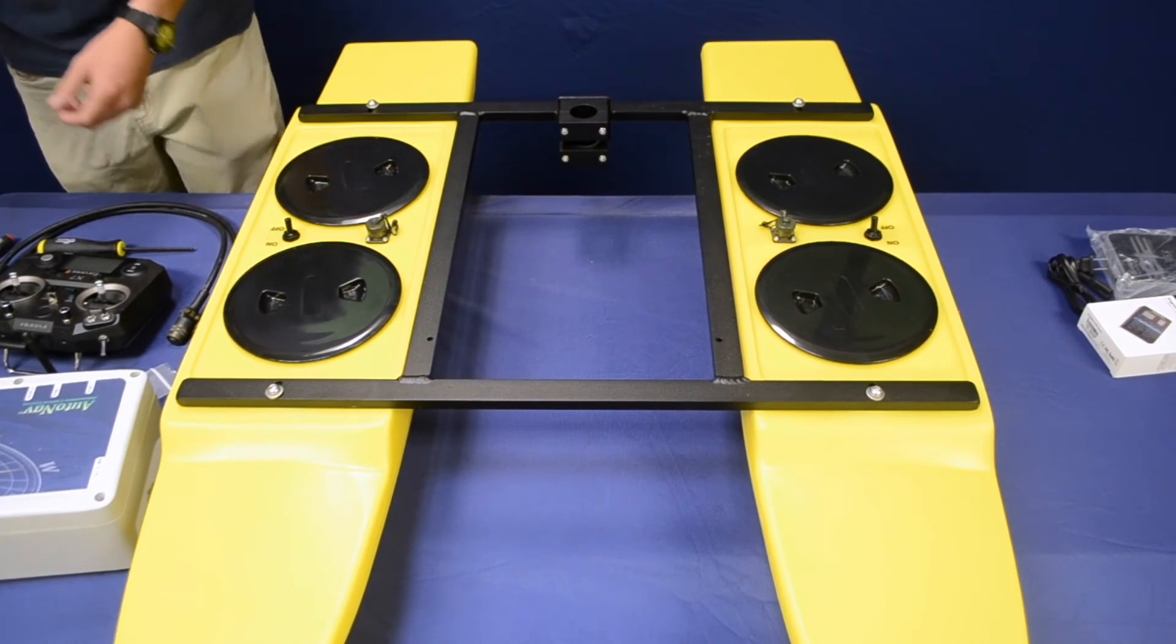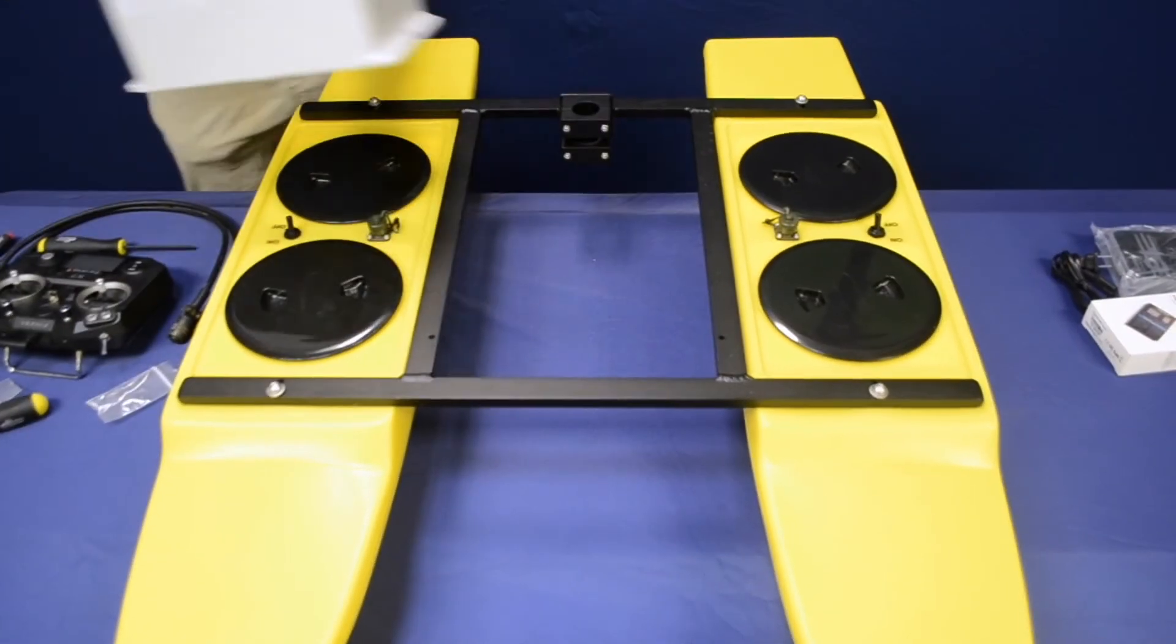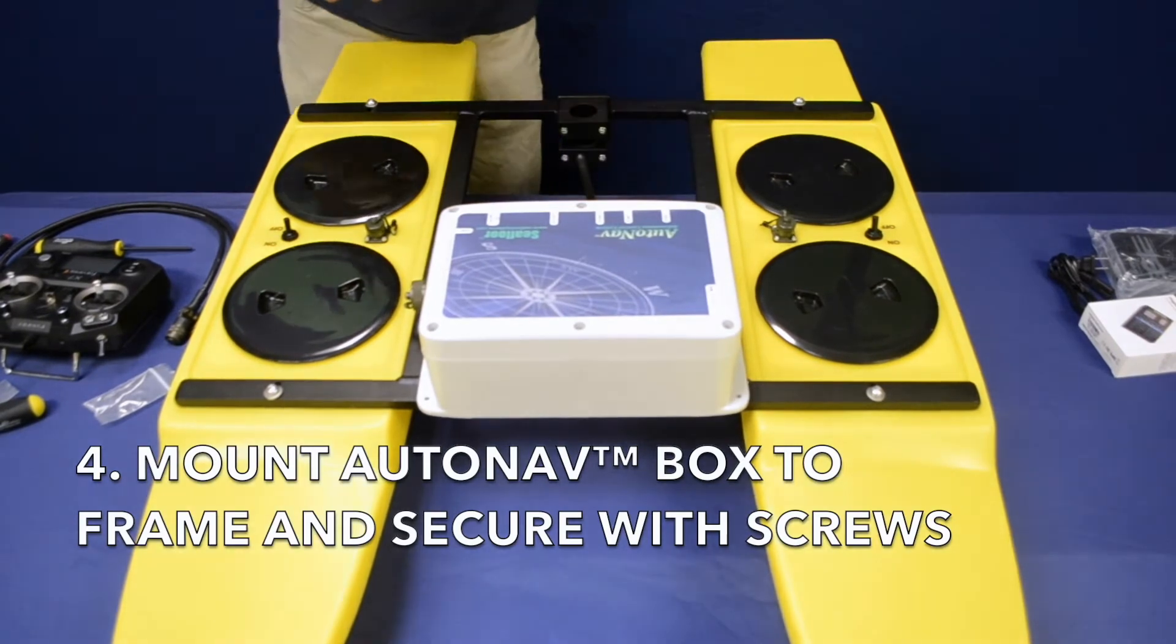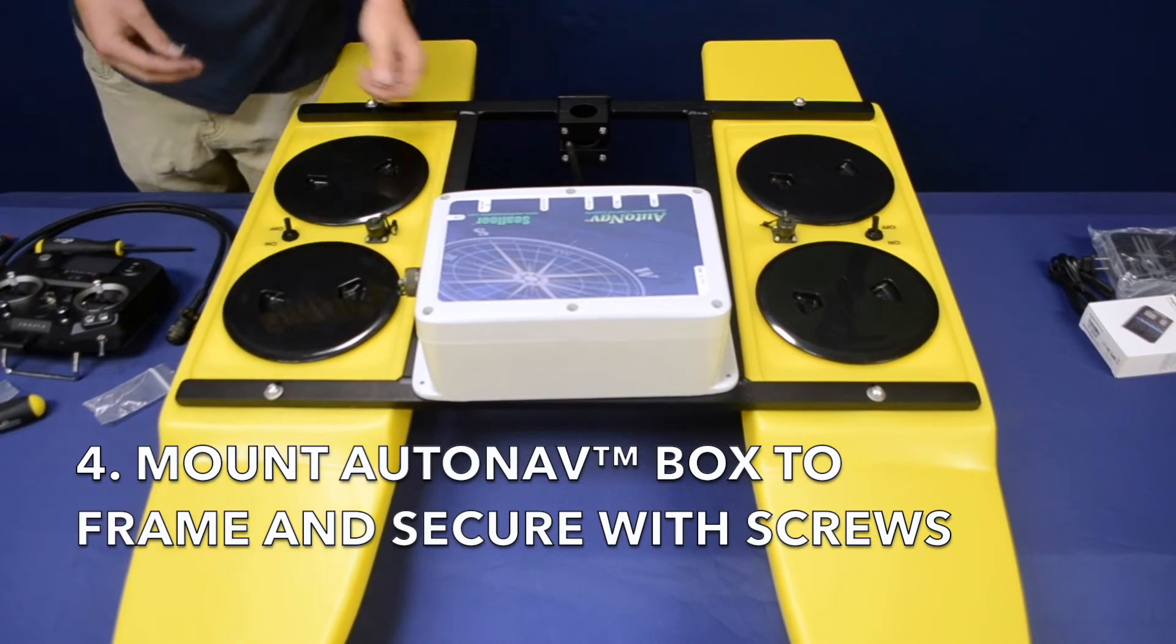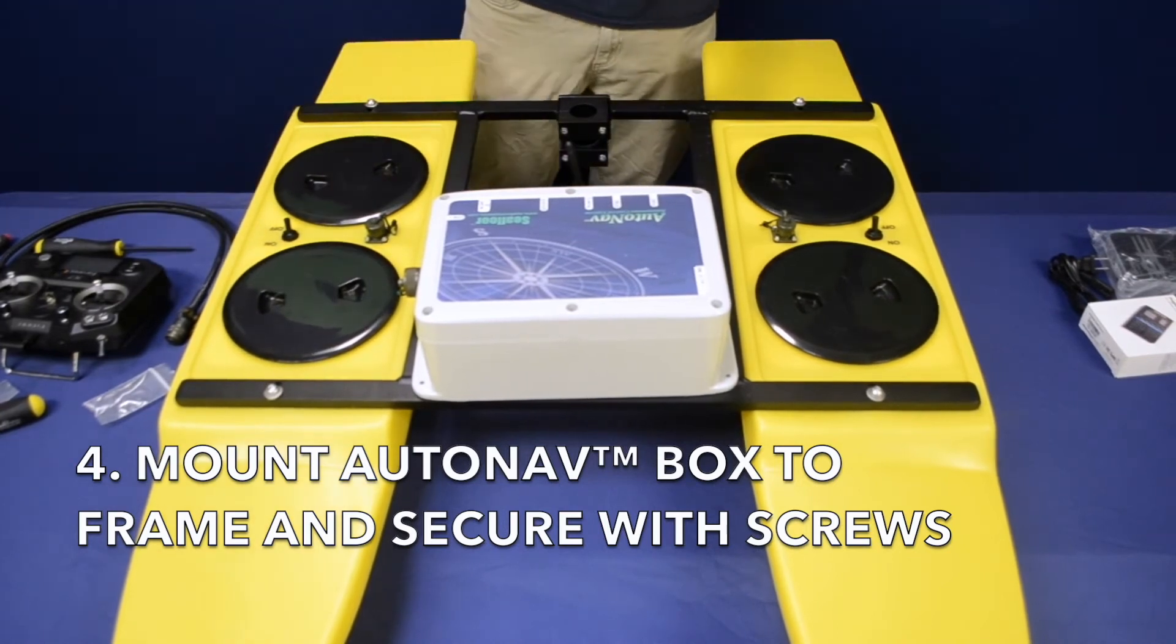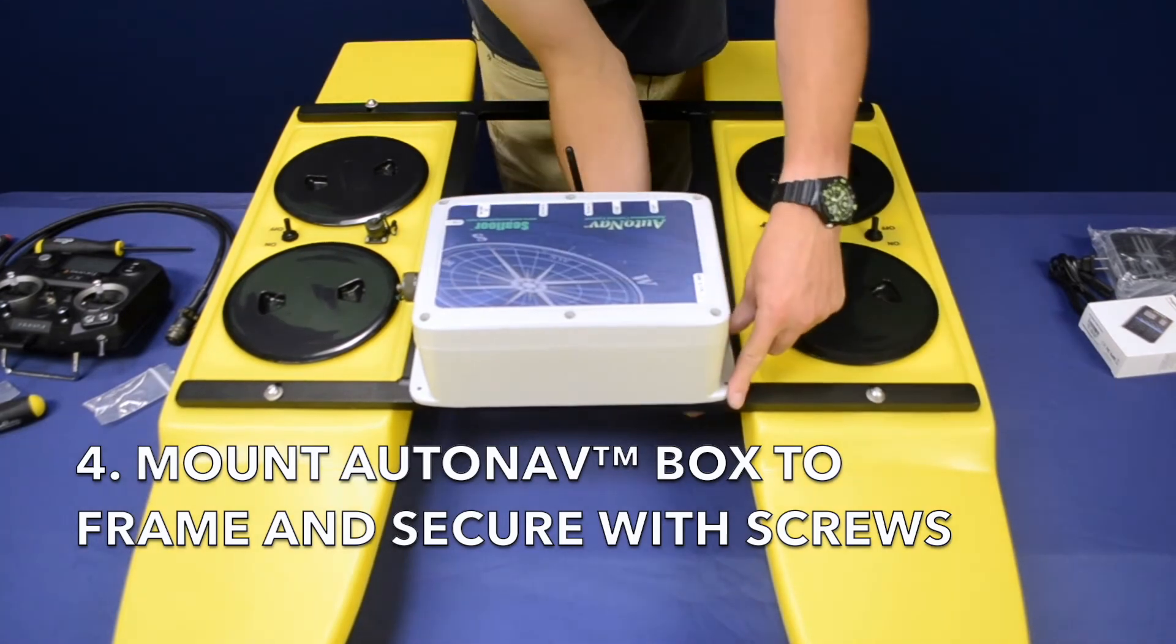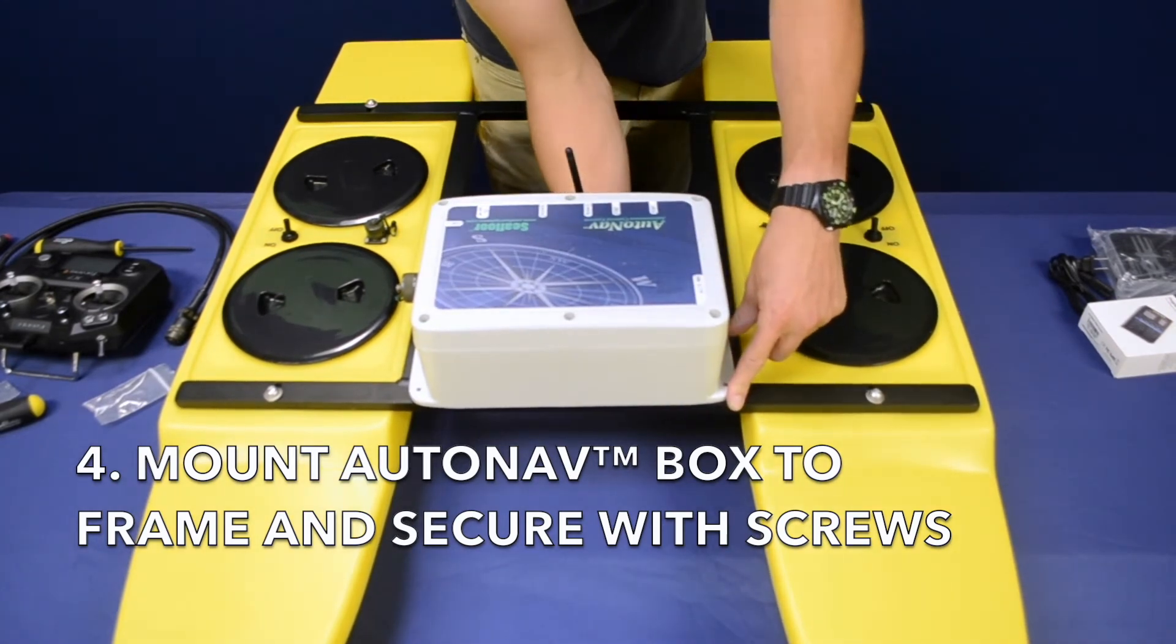To install the auto nav, you'll place the box over the holes on the pontoon. Then you'll use the included 1032 hardware to line the box up with said holes. Then the wingnuts will slide on down below and tighten down to secure the box.